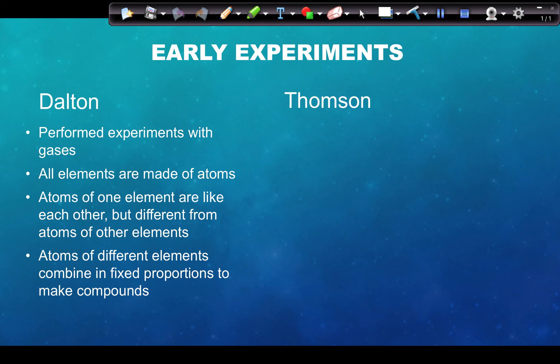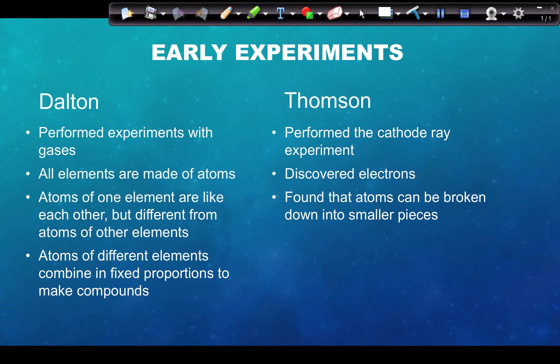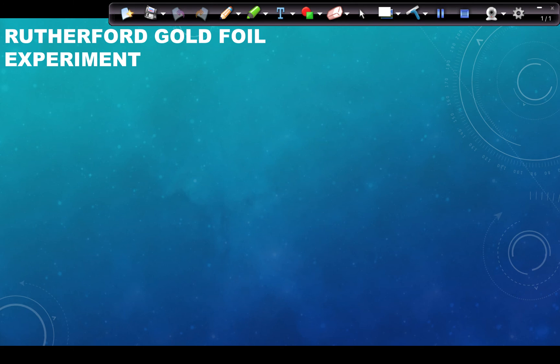Thomson was another early atomic experimenter. He performed the cathode ray experiment, where he discovered that there is negatively charged matter that comes off of atoms — he discovered electrons. He found that atoms can be broken into smaller pieces, with the electron being the first subatomic particle discovered. He came up with the plum pudding model, with all positives and negatives evenly distributed throughout the atom.